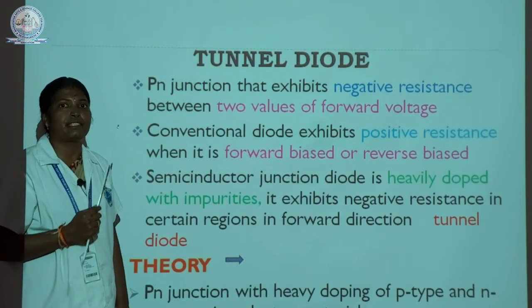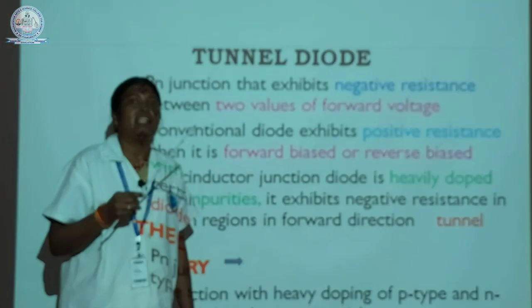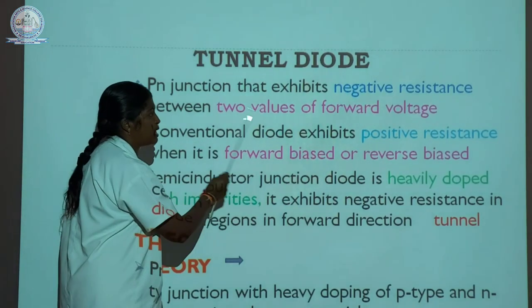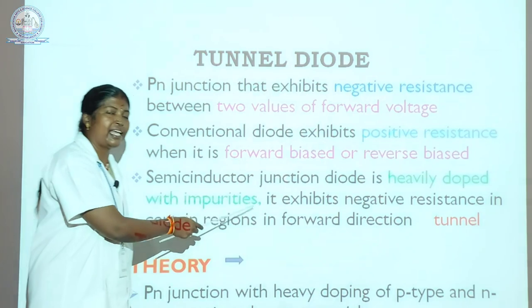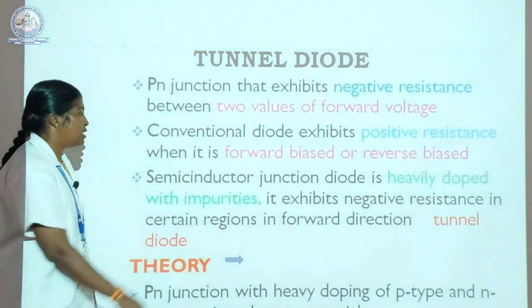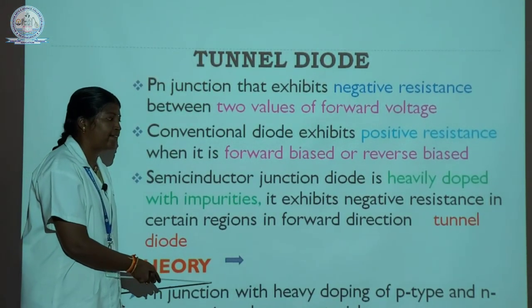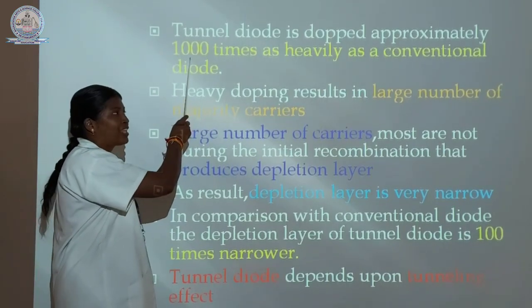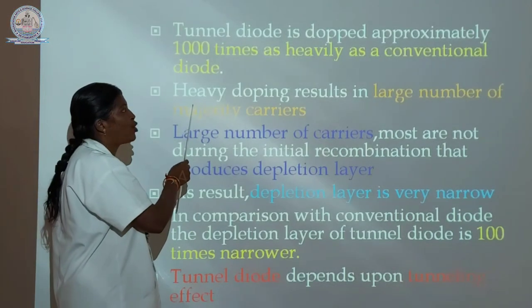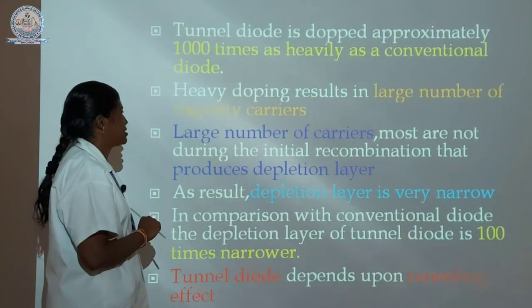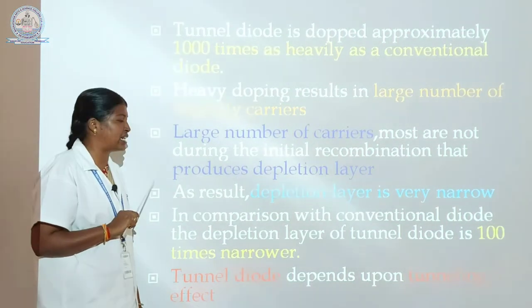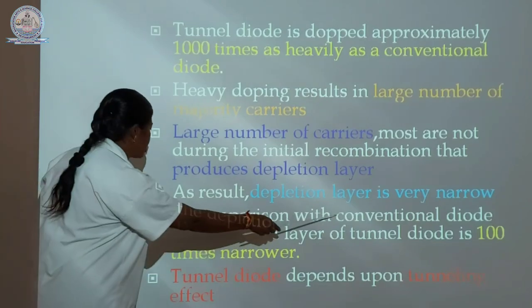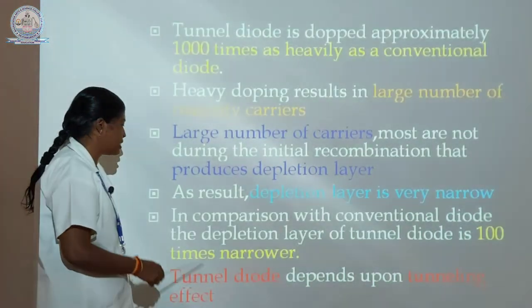A semiconductor is an electrical conductive material somewhere between a conductor and an insulator. A semiconductor junction diode that is heavily doped with impurities exhibits negative resistance in a certain region in the forward direction. The tunnel diode has heavily doped P-type and N-type semiconductor materials, doped approximately 1000 times as heavily as a conventional diode. The heavy doping results in a large number of majority carriers, and the depletion layer is 100 times narrower than in a conventional diode.